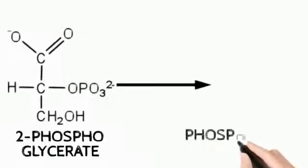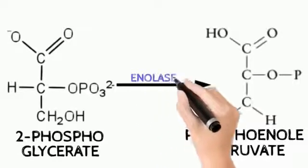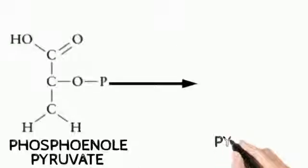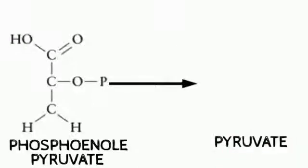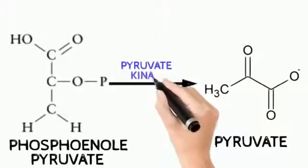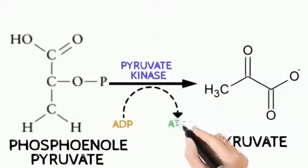Next, 2-phosphoglycerate is converted into phosphoenol pyruvate by the enzyme enolase. Finally, phosphoenol pyruvate is converted into pyruvate by the enzyme pyruvate kinase, and one ATP molecule is produced in this step. With this step, the second phase of glycolysis ends.